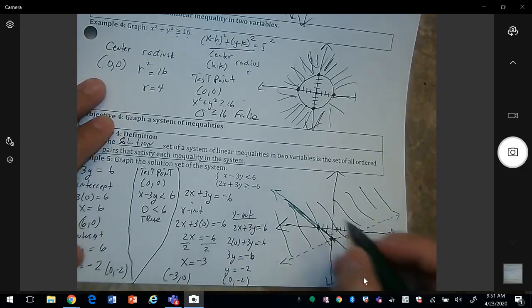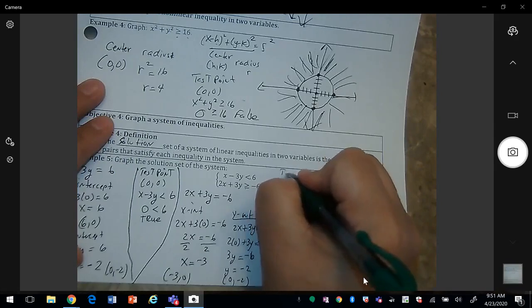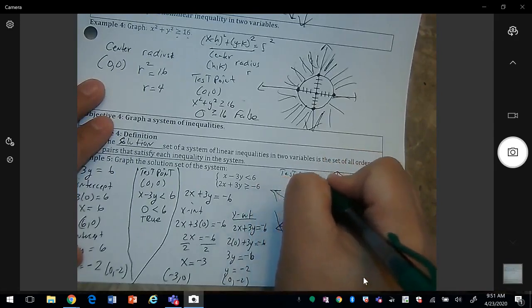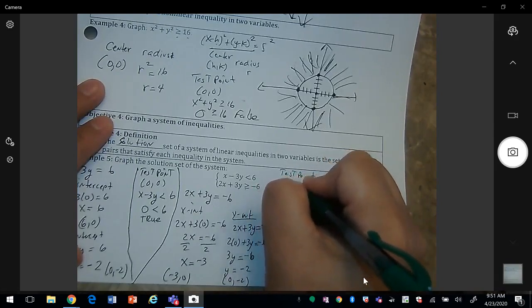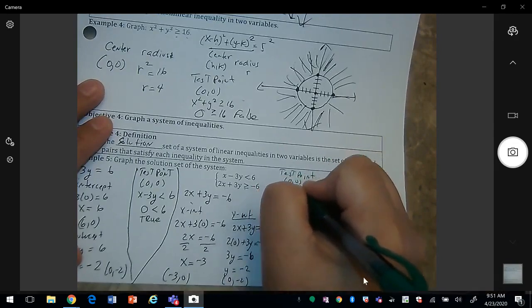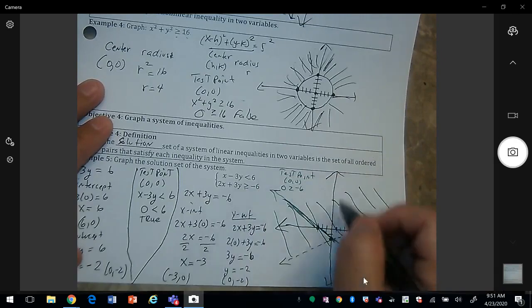And then we need a test point. So my test point would be 0, 0. So 0 is greater than negative 6. That's true. So I'm going to shade above the line.